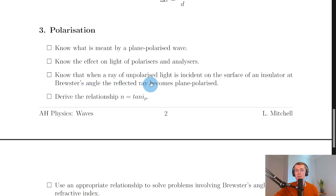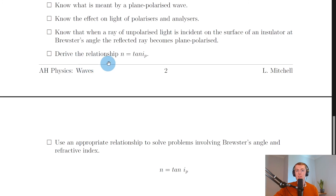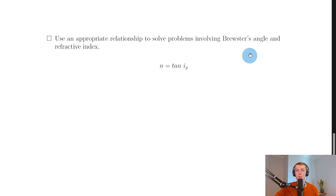You need to know that when a ray of unpolarized light is incident on the surface of an insulator at Brewster's angle, the reflected ray becomes plane polarized — examples include water and glass surfaces. Brewster's angle is the angle of incidence which causes the angle between the reflected and refracted rays to be 90 degrees. You need to derive the relationship N equals tan(IP), relating refractive index N to Brewster's angle IP, using Snell's law from higher physics, and be able to solve problems using this equation to find either the refractive index or Brewster's angle.